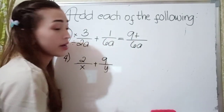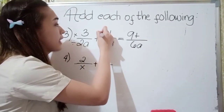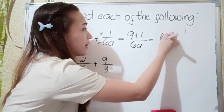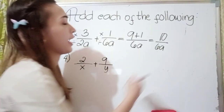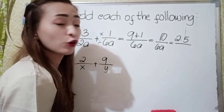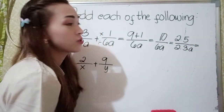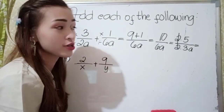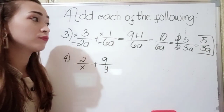Three times three is nine. Then, 6A divided by 6A is one, and one times one is one. Nine plus one is ten, giving us ten over 6A. Since we can simplify ten over 6A — the factors of ten are two times five, and the factors of 6A are two times three times A — the twos cancel, and our final simplified answer is five over 3A.